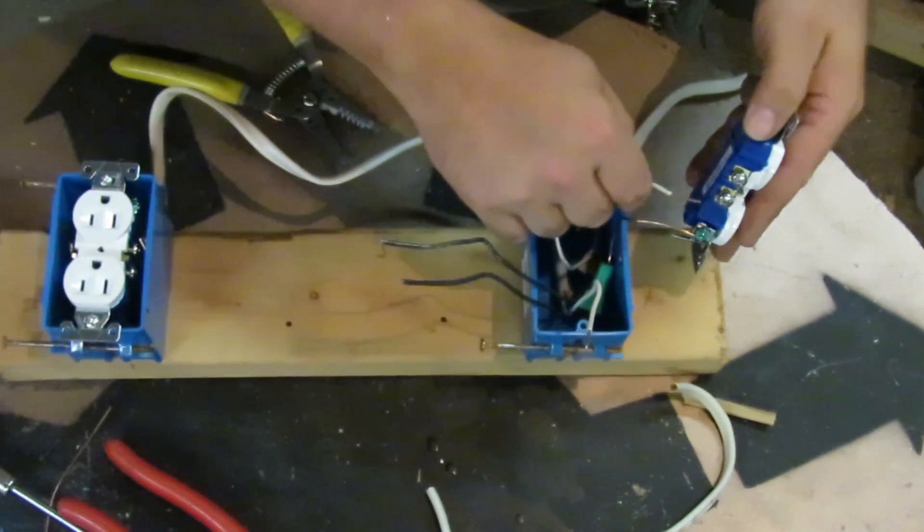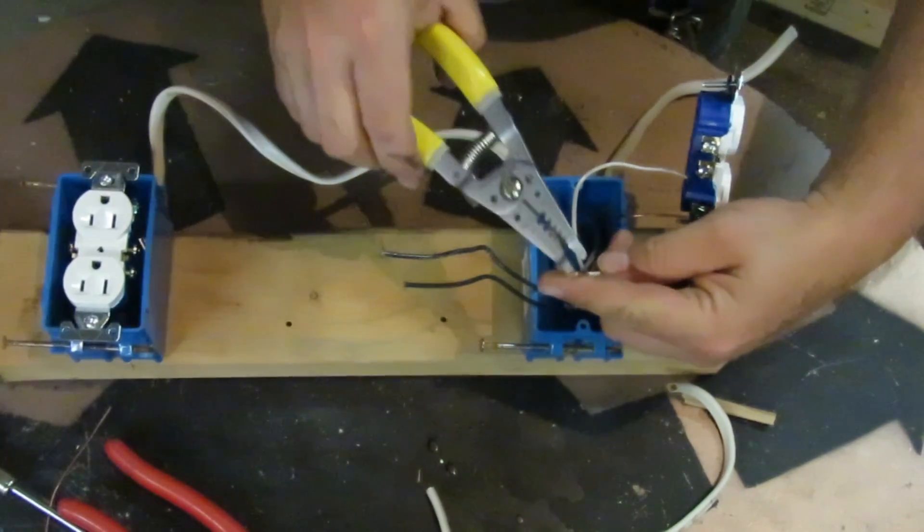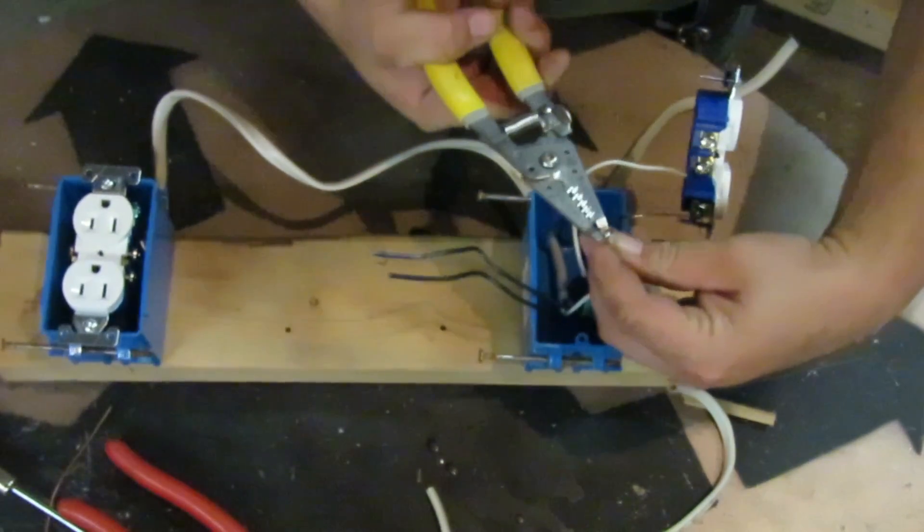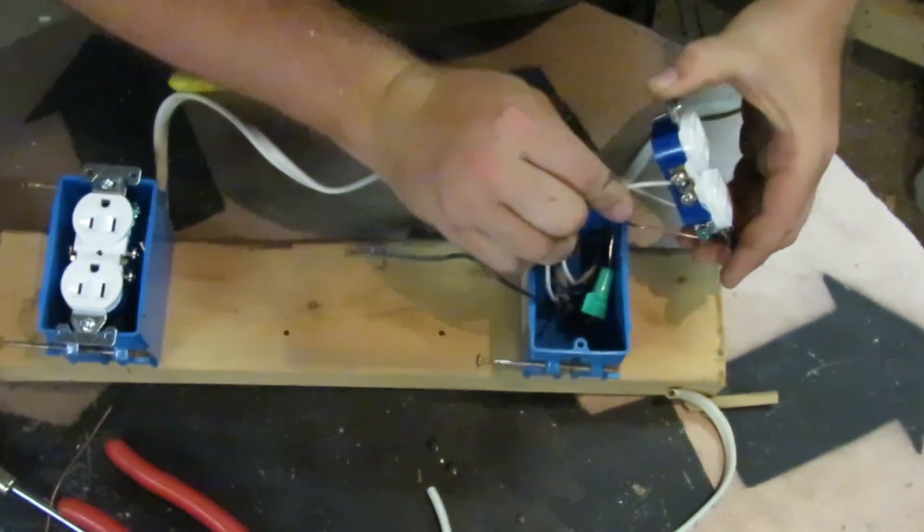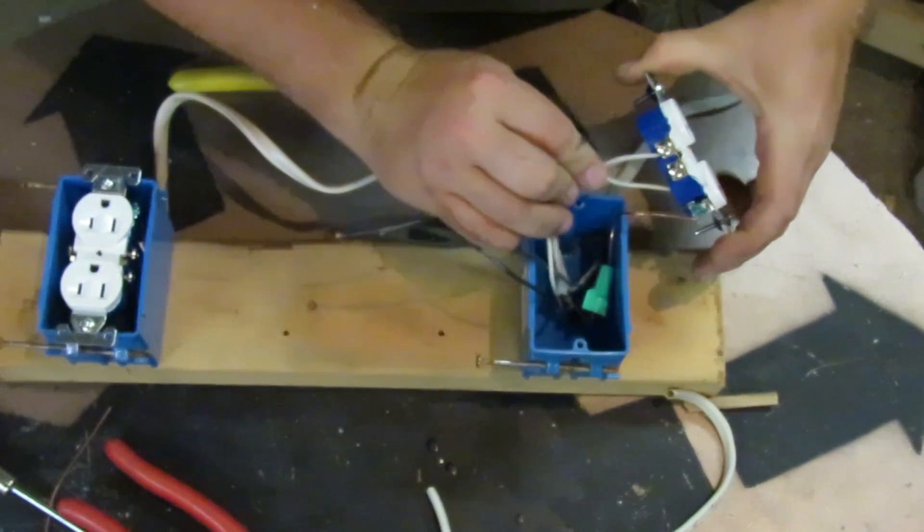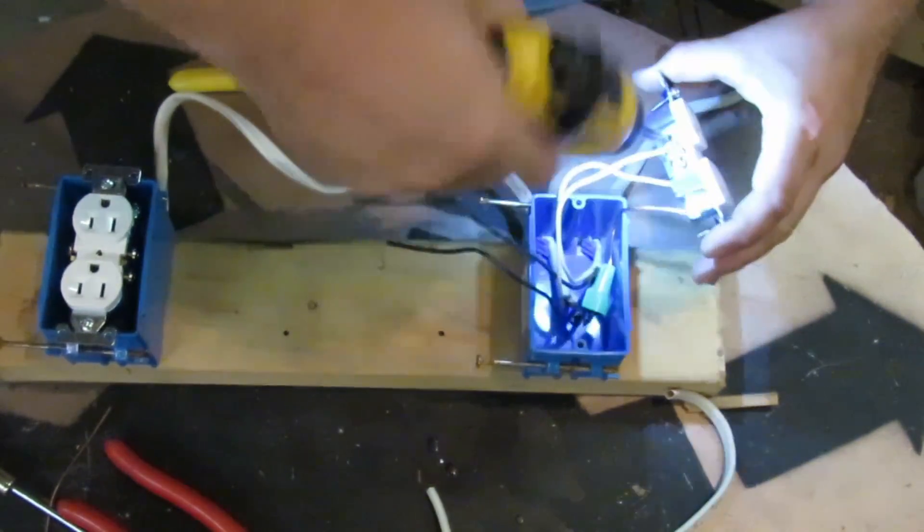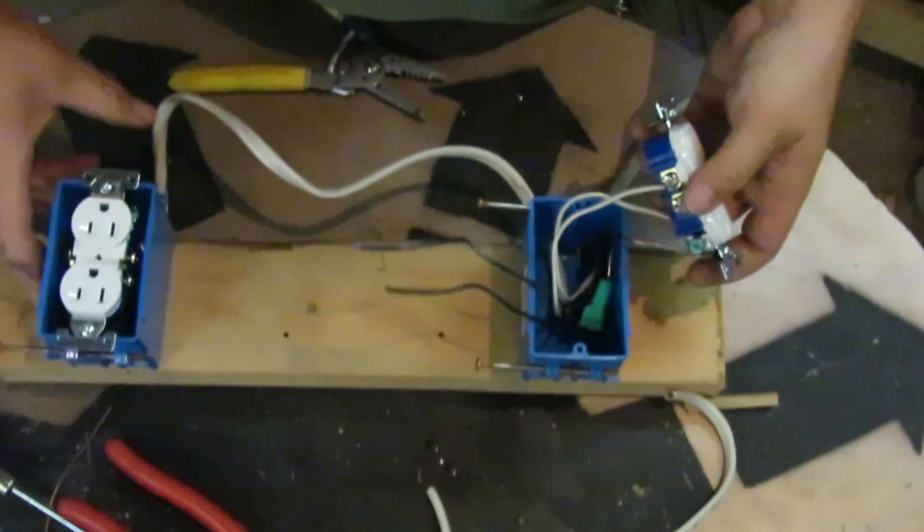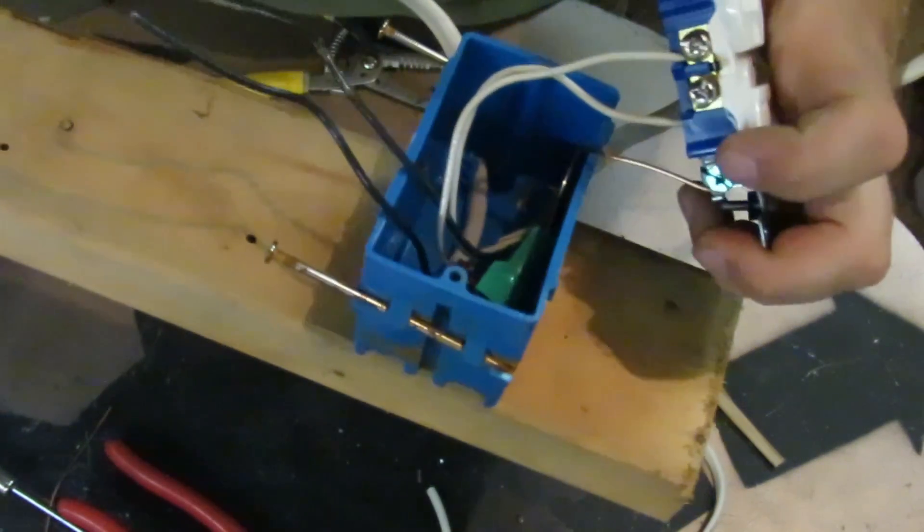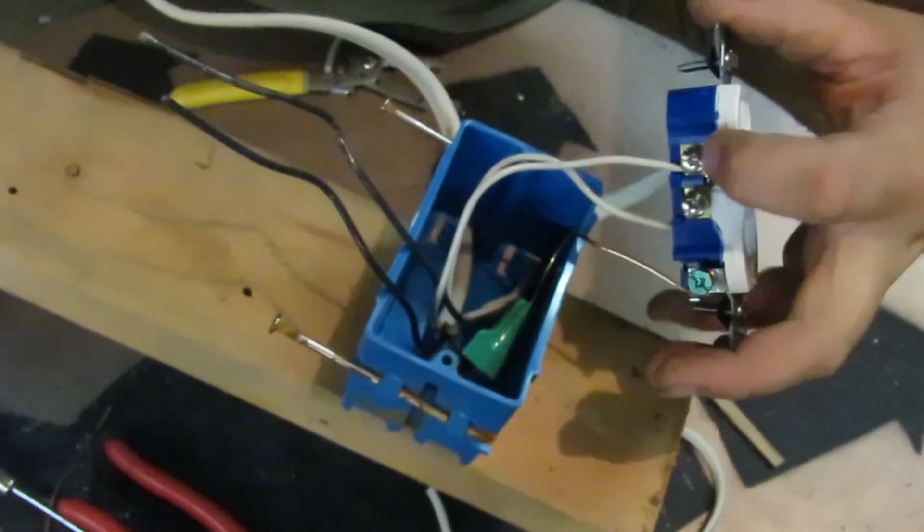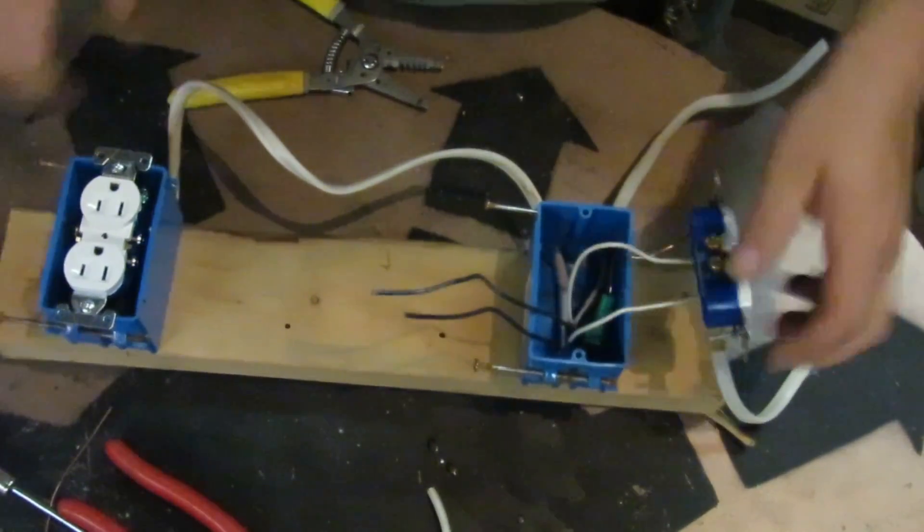Now you don't have to push them in the back. You can actually hook them around the screws if you want. It doesn't really matter, as long as they're on the same side. As long as your neutral wires are under the silver screws, it'll work just fine. You see the bottom one is pushed in and the top one's around the screw. And that'll work just fine.